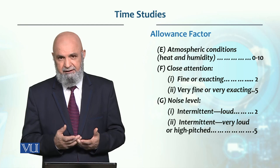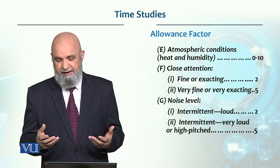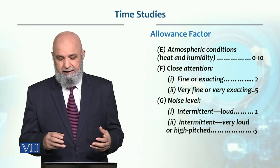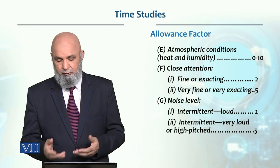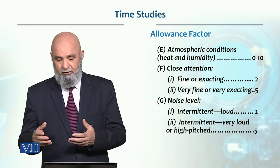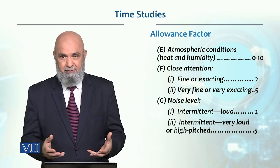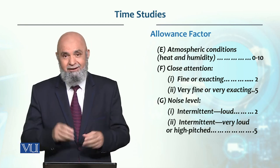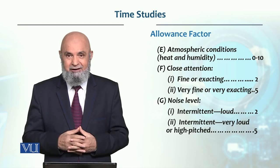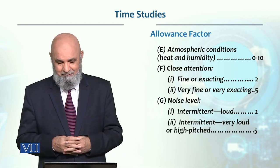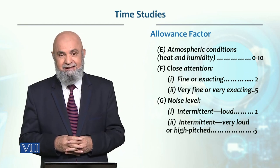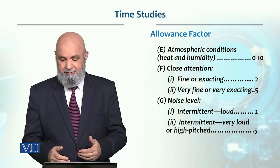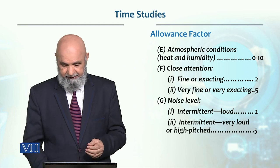Atmospheric condition — heat और humidity ज्यादा है तो allowance 0 to 10% range करता है। बहुत close attention दे रहे हैं तो 2%, very fine और very exacting काम है — जैसे सुई में धागा डालना — तो 5% allowance। Noise level भी stress पैदा करती है, तो उसके basis पर 2% या 5% accordingly होगा।